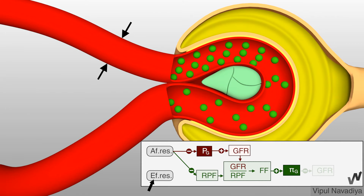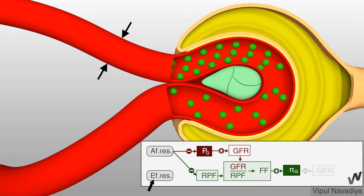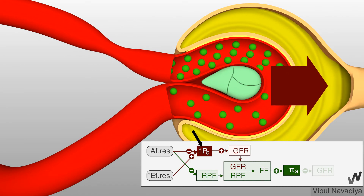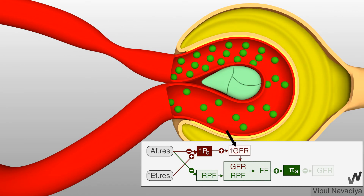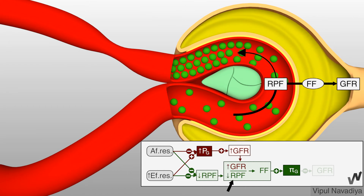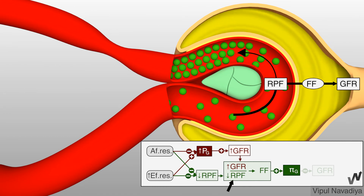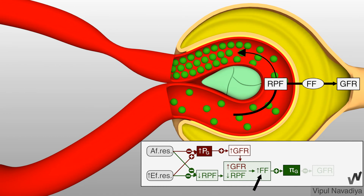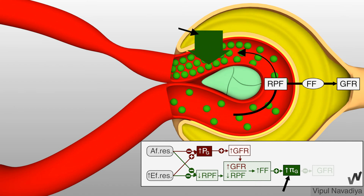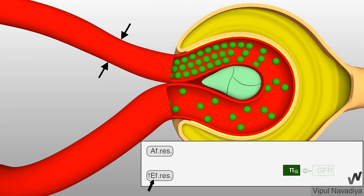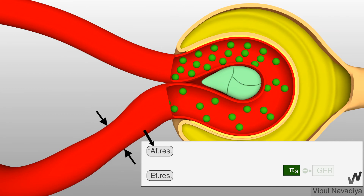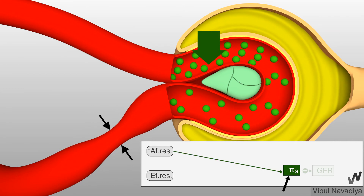Things are different in the case of efferent arterioles. When efferent arteriolar resistance increases, capillary hydrostatic pressure increases, which increases GFR. But plasma flow is reduced. Here, GFR is increasing while renal plasma flow is falling, resulting in an increase in filtration fraction — and so osmotic pressure increases. In a nutshell, constriction of efferent arterioles causes an increase in osmotic pressure, whereas changes in afferent arteriolar resistance do not affect osmotic pressure much.